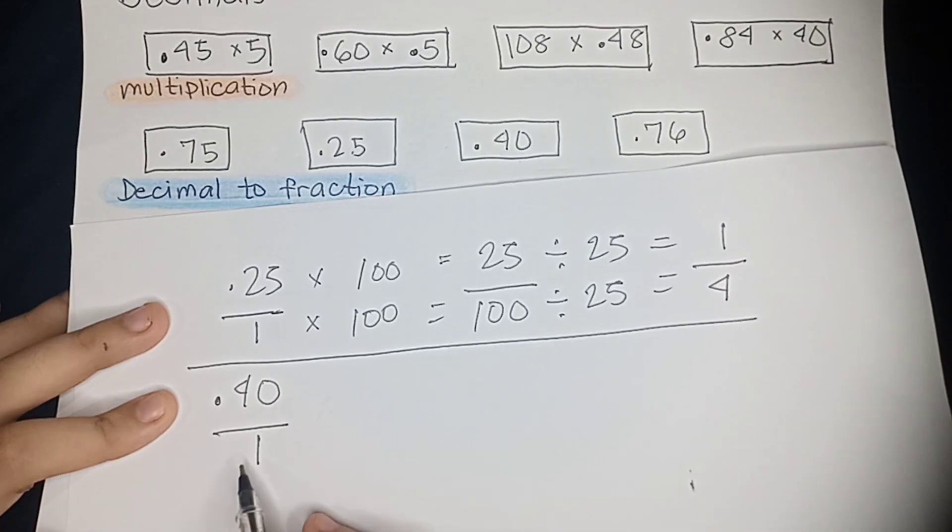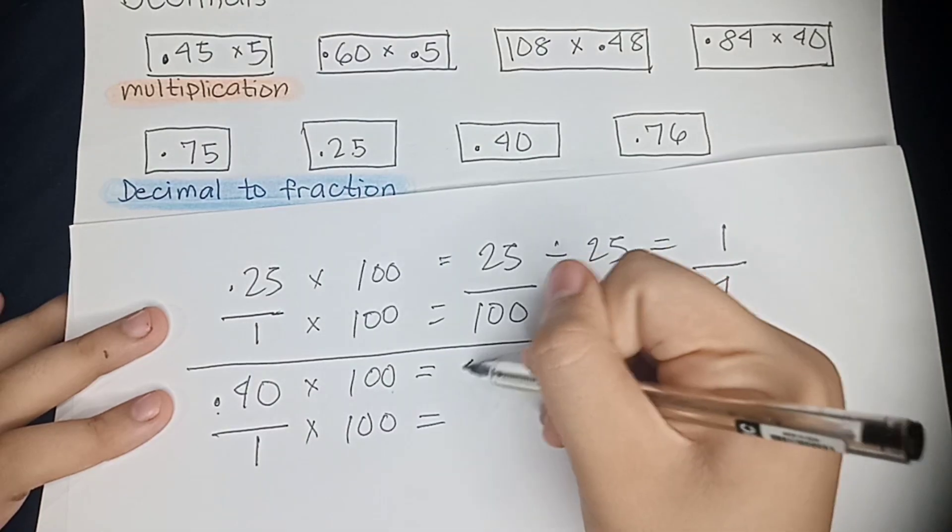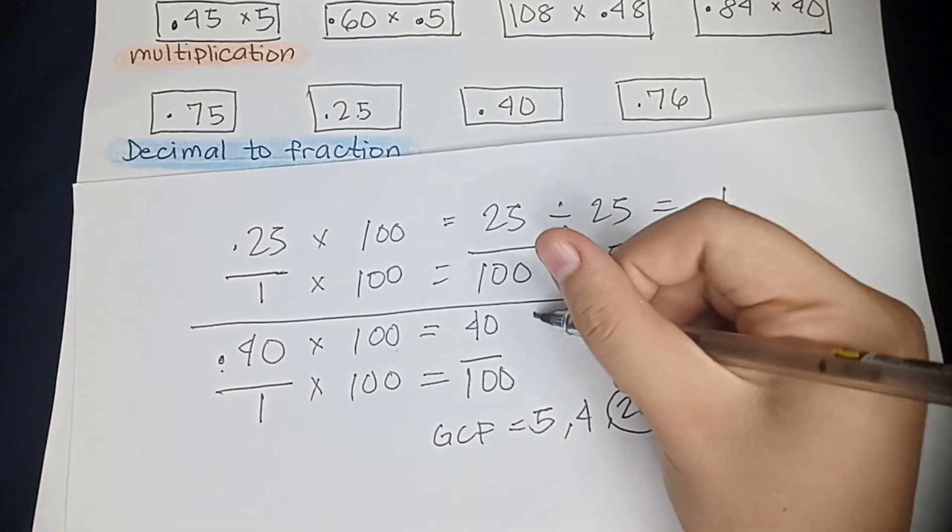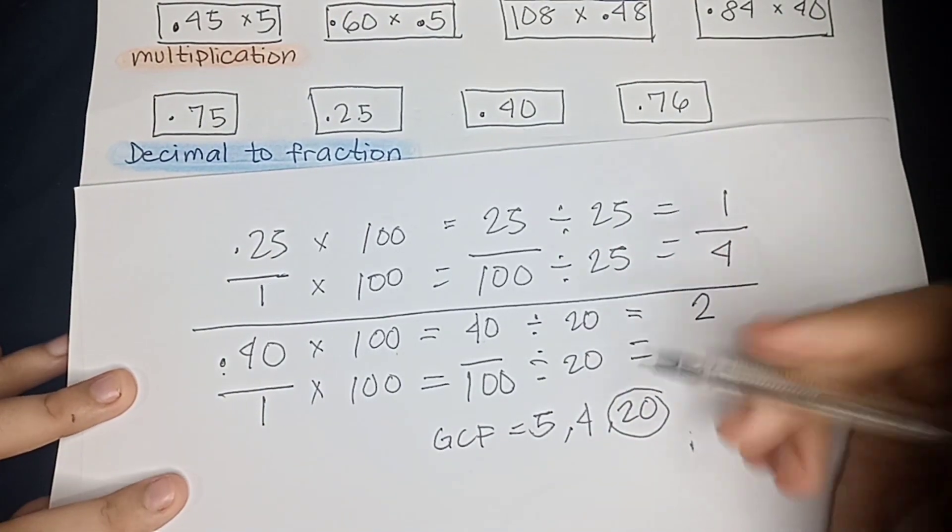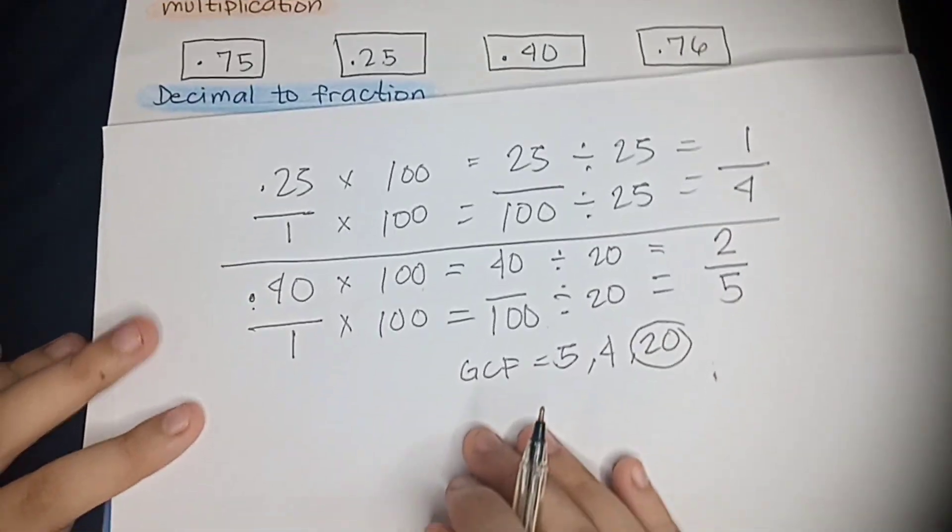Here we have 0.40 over 1. So let's multiply both sides by 100, which gives us 40 over 100. And their greatest common factor is 20. So divide 40 by 20 equals 2, and 100 divided by 20 equals 5. So there we have 2 fifths.